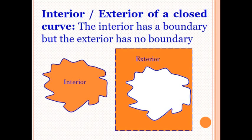Interior and exterior of a closed curve: The interior has a boundary but the exterior has no boundary. In the first figure, the interior is shown by the orange color, and in the second figure, the exterior part is shown by the orange color.